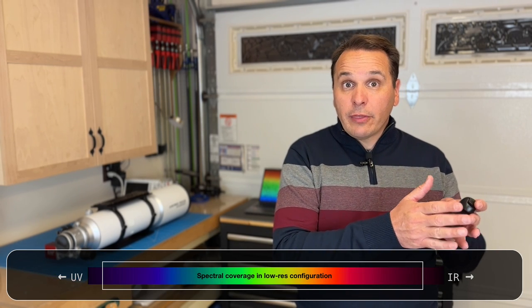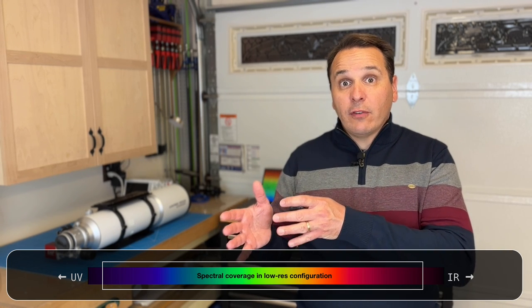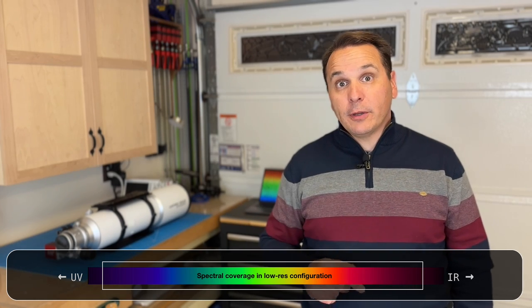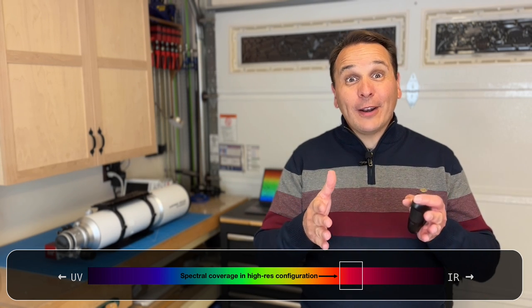So you're probably wondering why I don't always use the spectrograph in high resolution. Well, with this kind of spectrograph, the higher the resolution, the narrower the window into the electromagnetic spectrum you can study in a single measurement. So with my spectrograph, in its low resolution configuration, I can go from the near UV at roughly 3700 angstrom all the way to the near infrared at about 7500 angstrom in a single measurement.